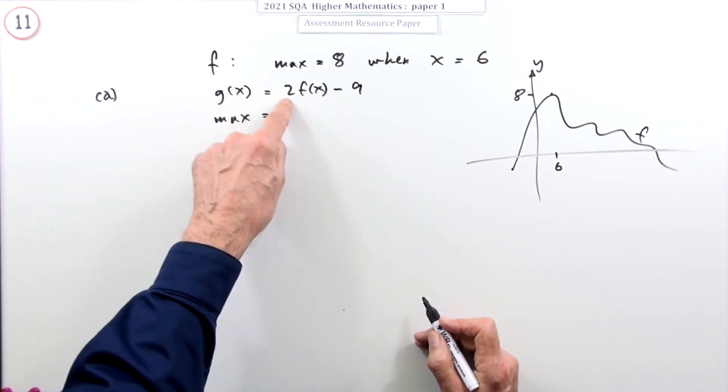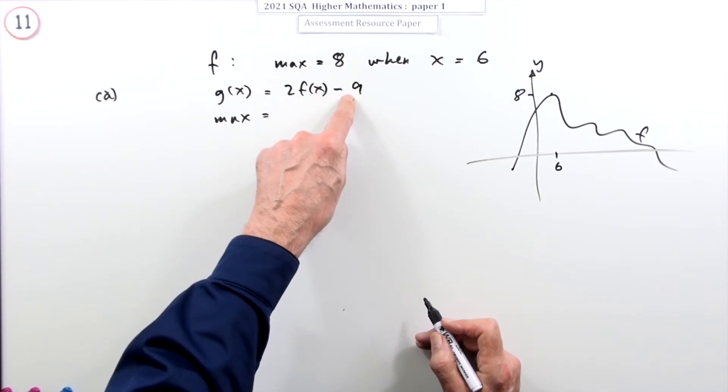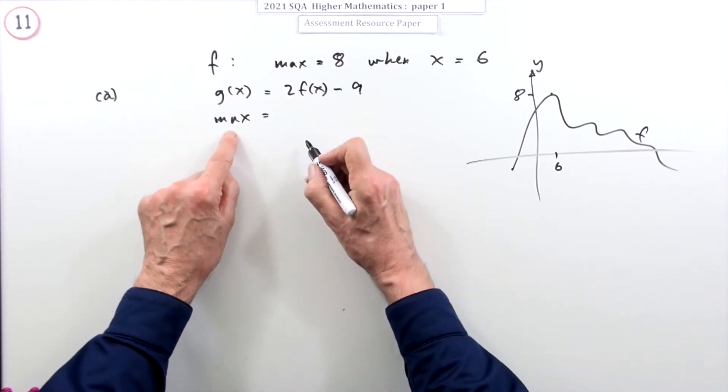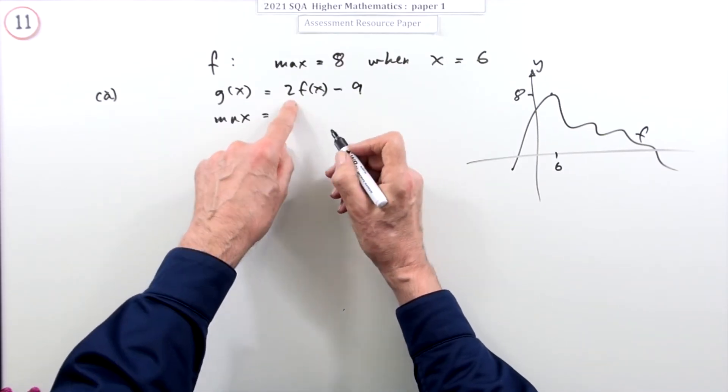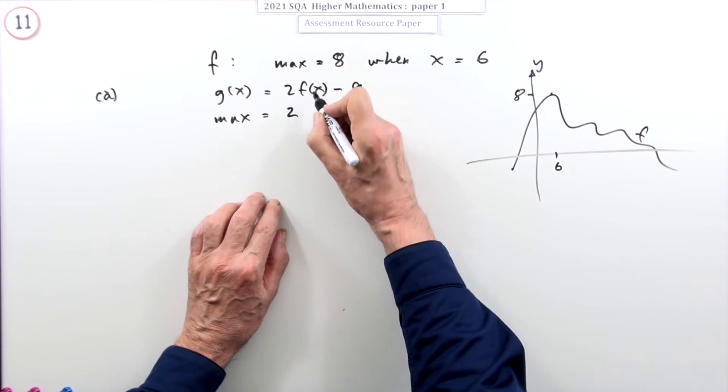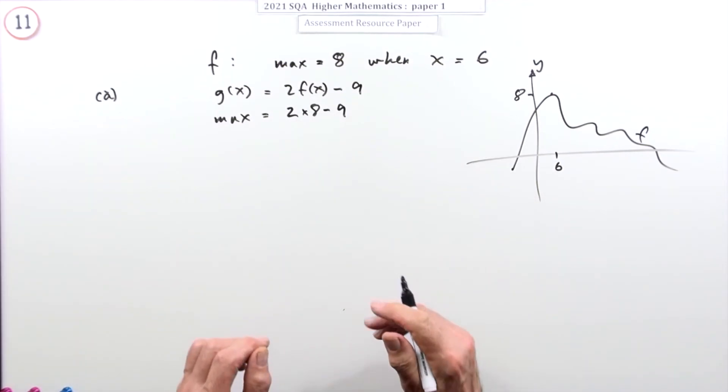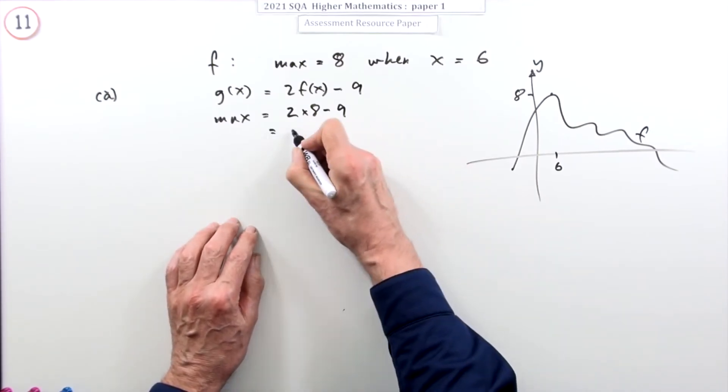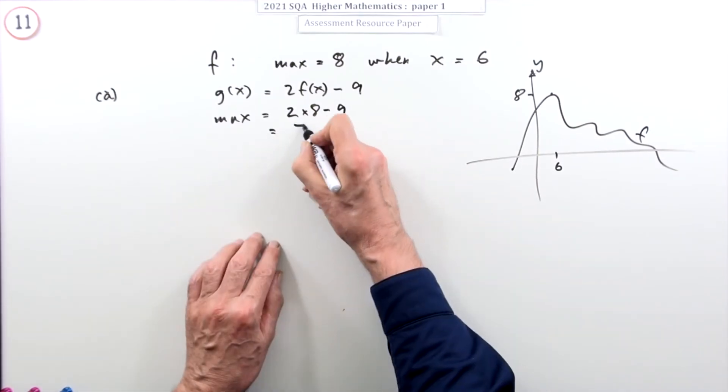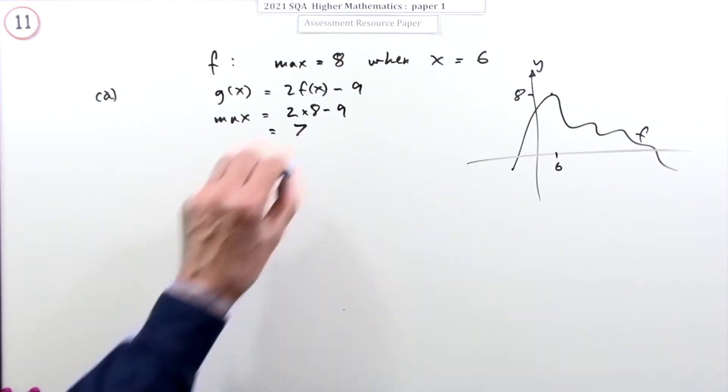The height of g is twice the height of f but subtract nine. What's the maximum going to be? Well, it'll be twice the height of this whenever it's at its maximum, so it's 2 times 8 minus 9. Sixteen take away nine, so the maximum value is going to be seven.